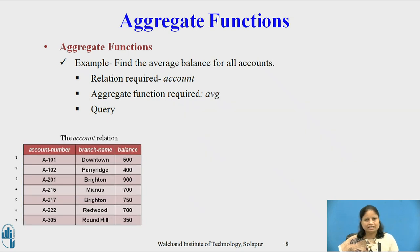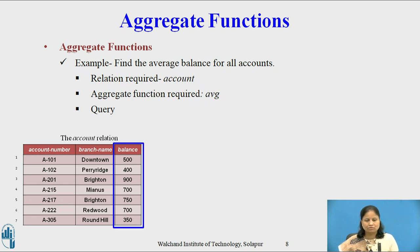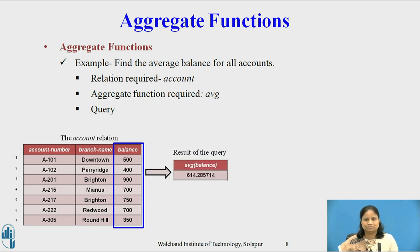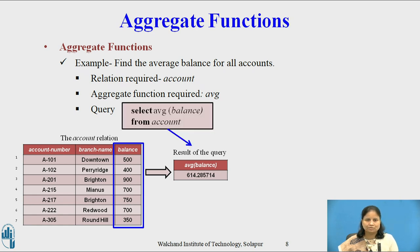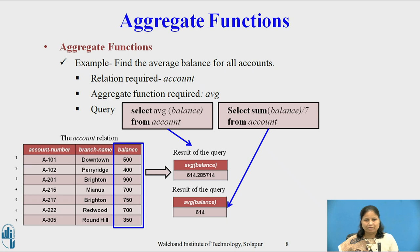Fourth example: find the average balance for all accounts. We apply the aggregate function Average to the field Balance, and it returns the average of Balance as a result. The query is: SELECT AVG(balance) FROM account. The query using the average formula can also be written using SUM, and the result is 614.